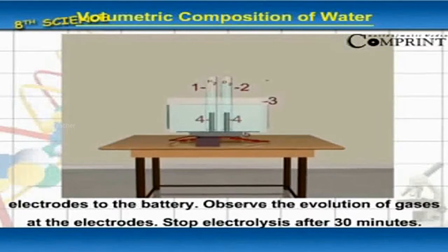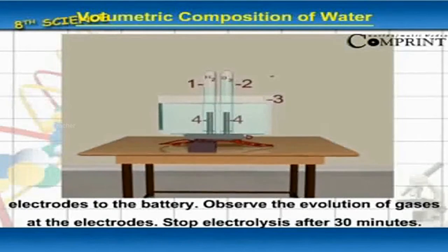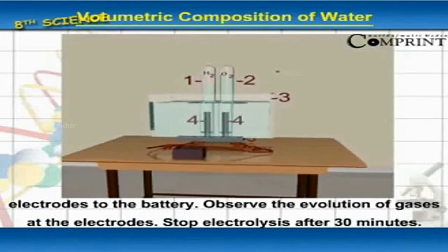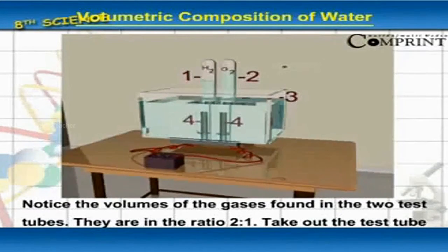Connect the electrodes to the battery. Observe the evolution of gases at the electrodes. Stop electrolysis after 30 minutes. Notice the volume of gases formed in the two test tubes.